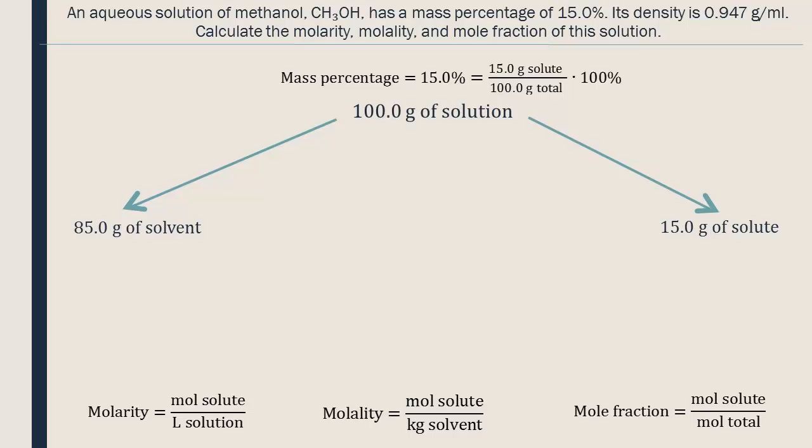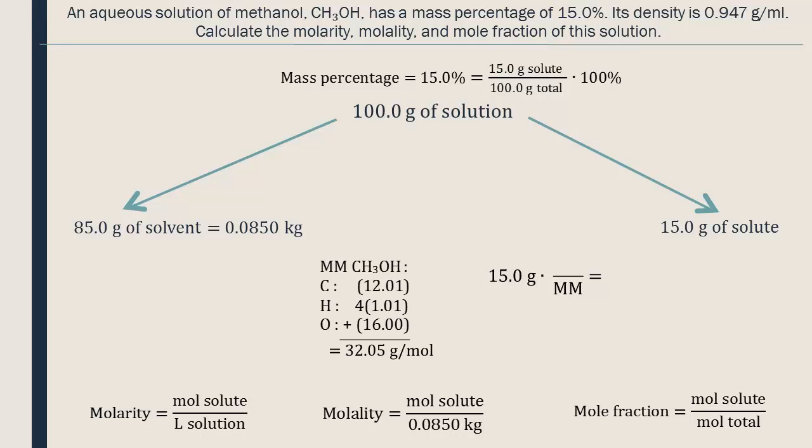We will convert the 85g of water into kilograms and place it into the molality equation. We can divide the number of grams of solute by its molar mass to determine its quantity in moles. To find the molar mass of methanol, we add the mass of all the atoms in the molecule.